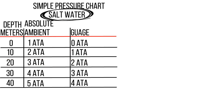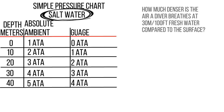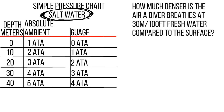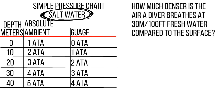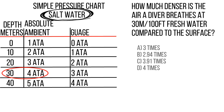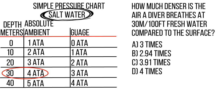Let's use another question to apply the approach: do the question as though it's in saltwater, then pick the answer that's a little bit less. The question is: how much denser is the air a diver breathes at 30 metres fresh water compared to the surface? At 30 metres in saltwater it's 4 atmospheres, so 4 times would be the answer for saltwater, but the question is freshwater, so we need to find the answer that's a little bit less — it's 3.91.